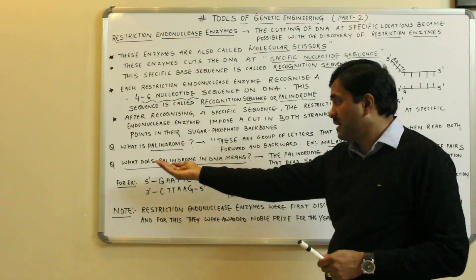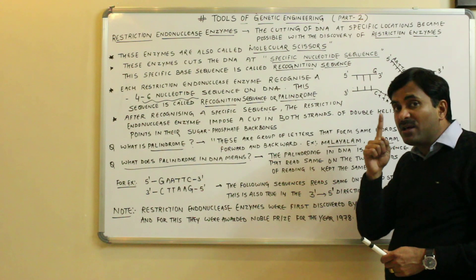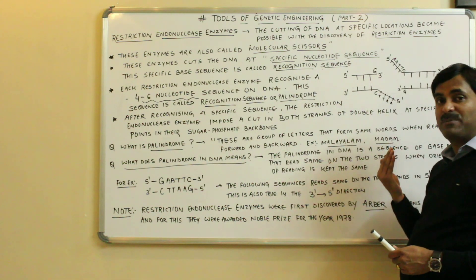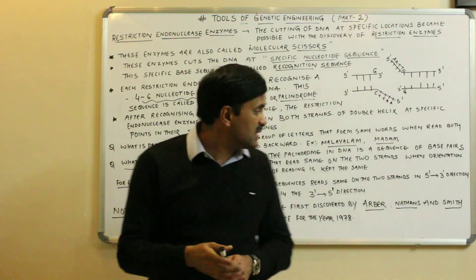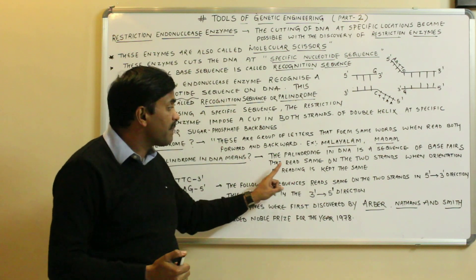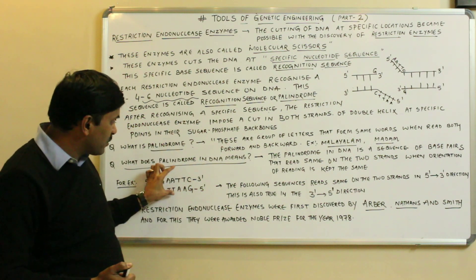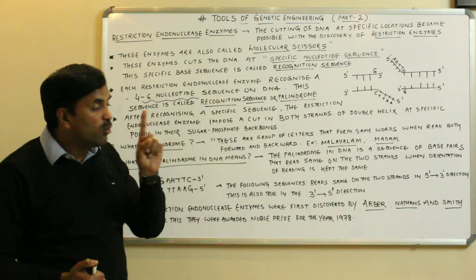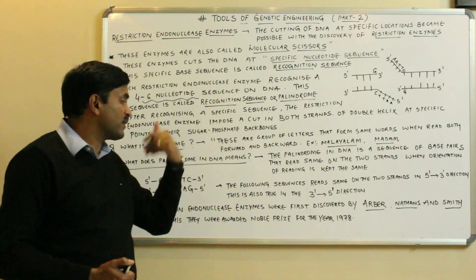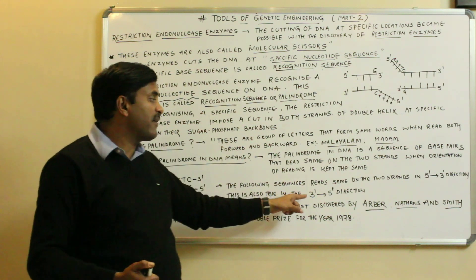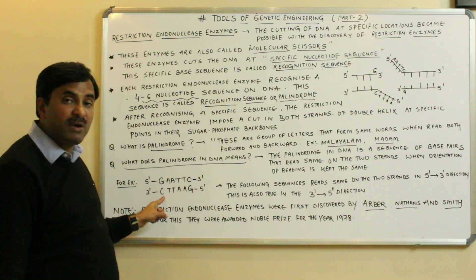So GAATTC read from 5' to 3' gives G-A-A-T-T-C, and the second strand read in 5' to 3' direction also gives G-A-A-T-T-C — so this is a palindrome sequence. This statement is also true if both strands are read in the 3' to 5' direction: C-T-T-A-A-G on one strand and C-T-T-A-A-G on the other, confirming it is the same.